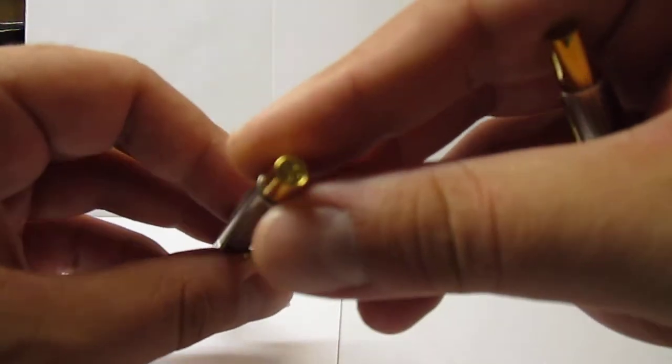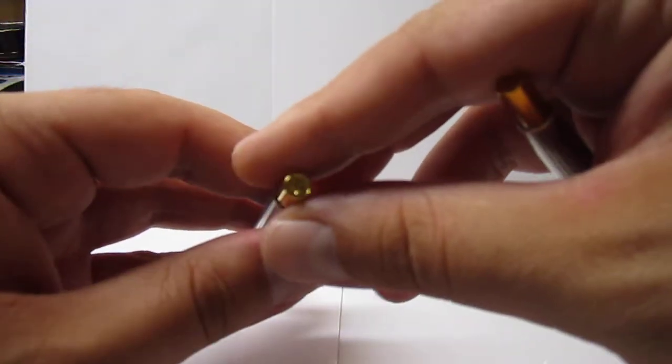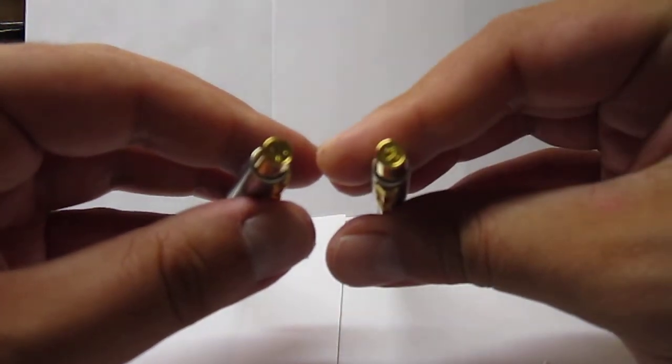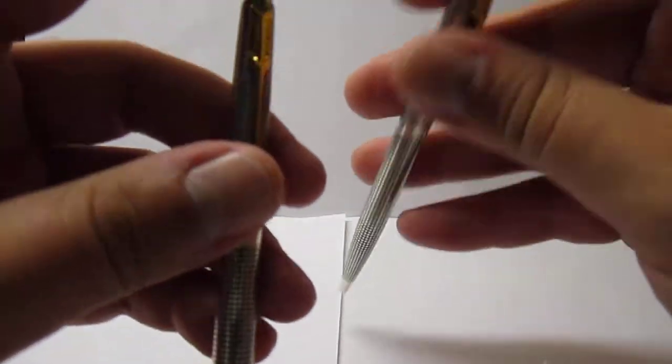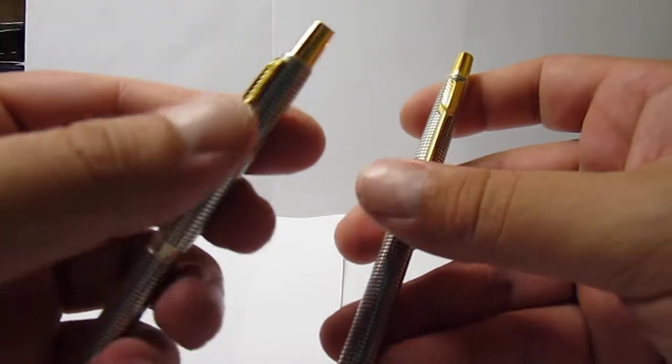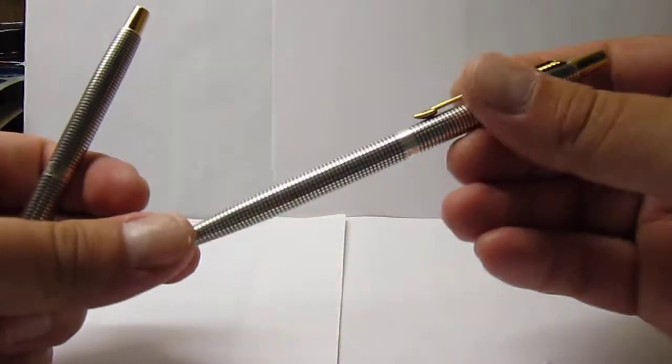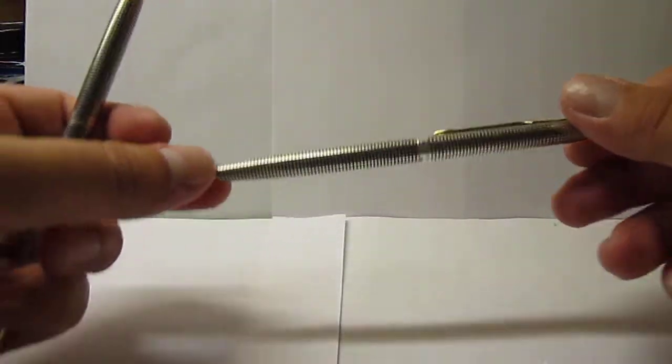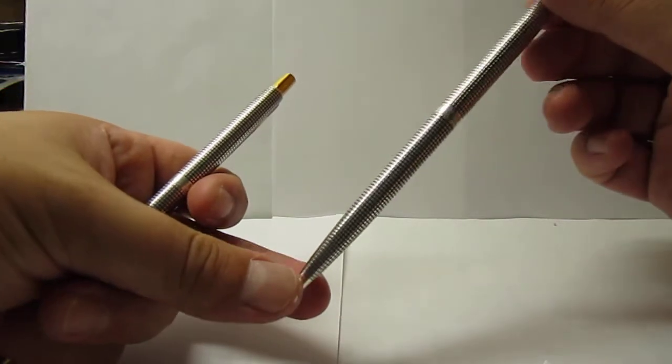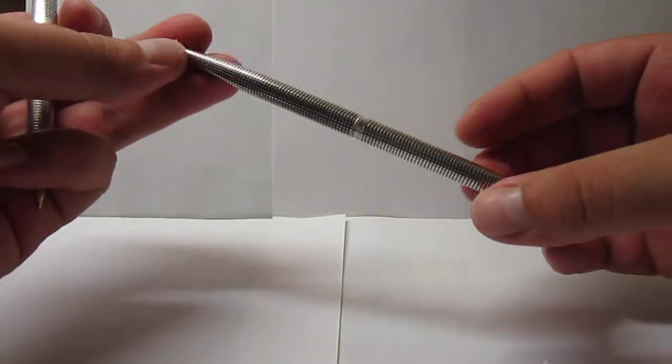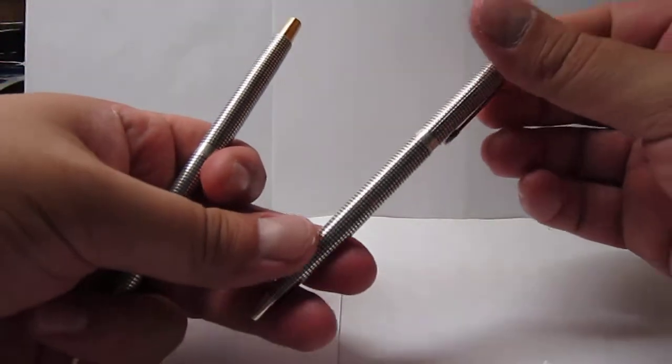We have the embossed logo on top, both on the pencil and pen. Something that you don't see on the New World Parkers. This is a sterling silver pens. It's all quadricular, square pattern to it.